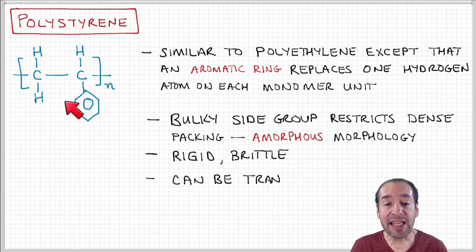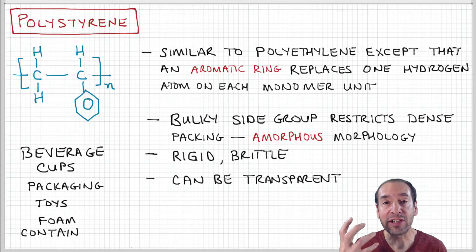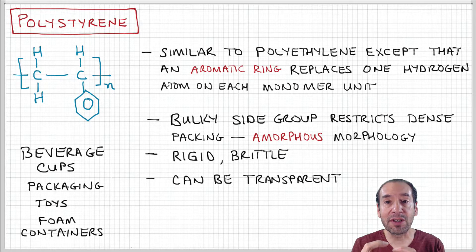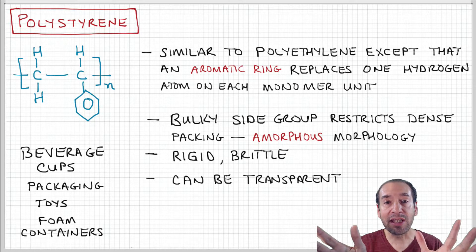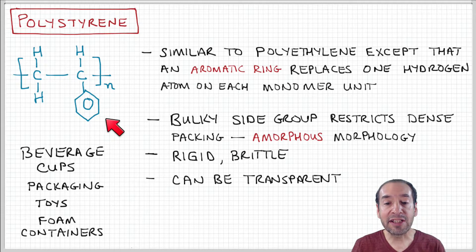The key is the size and rigidity of this aromatic ring, or phenyl group, that's attached to the side. This actually creates a barrier that restricts the degree to which the polymer chain can fold into a compact shape. Similar to the case with low-density polyethylene, where branching side groups prevent it from compacting into a dense crystalline structure, this bulky side group does the same thing.